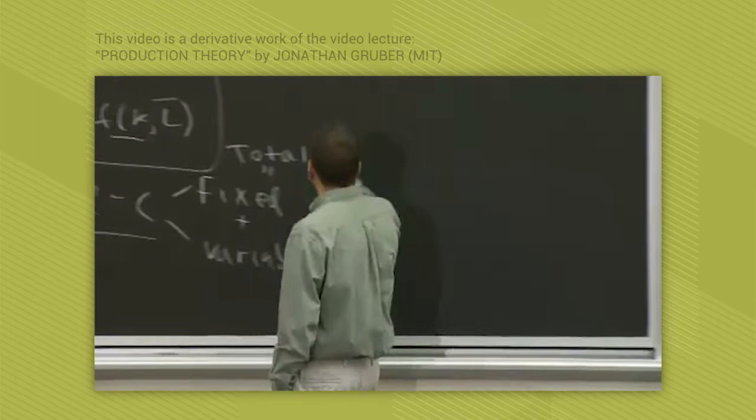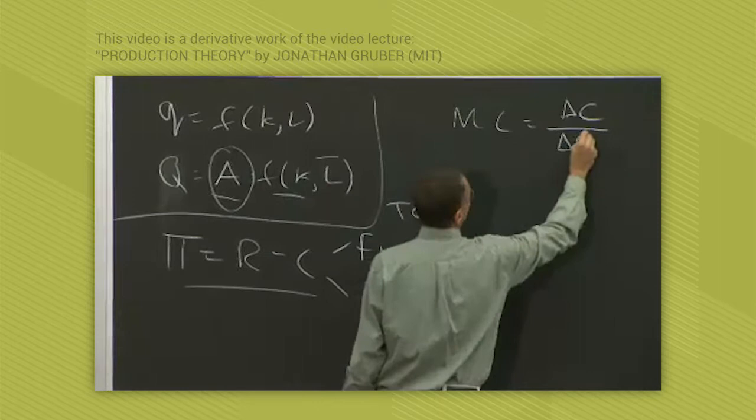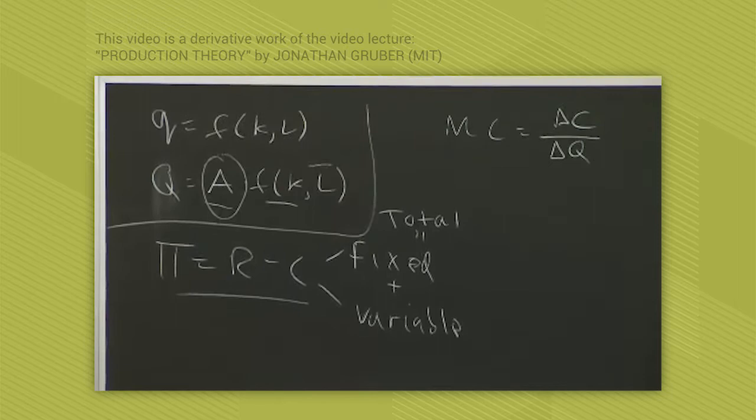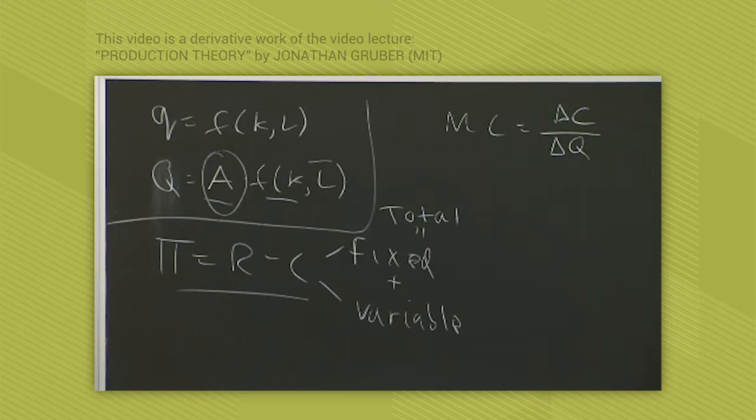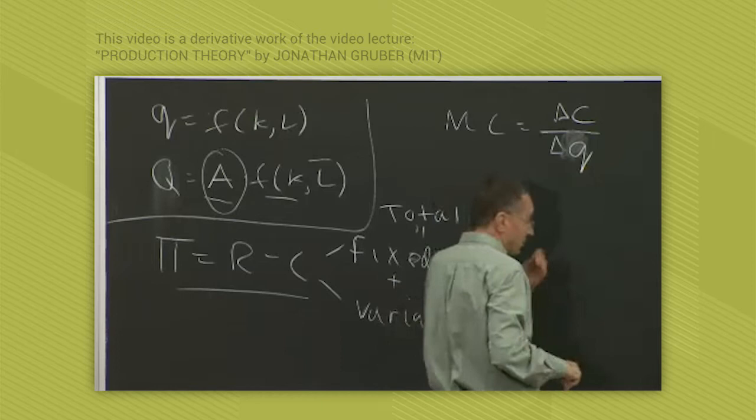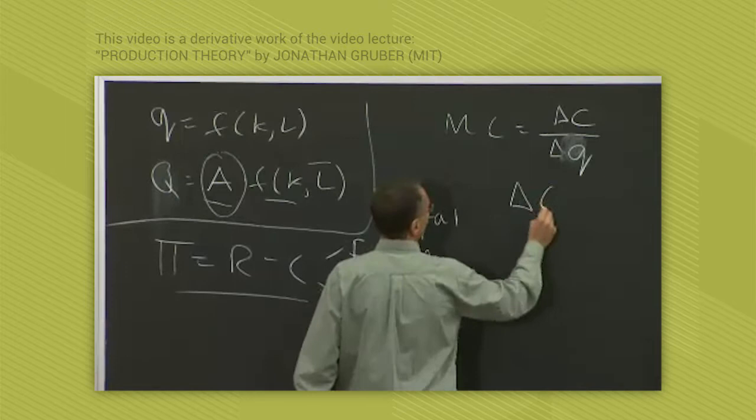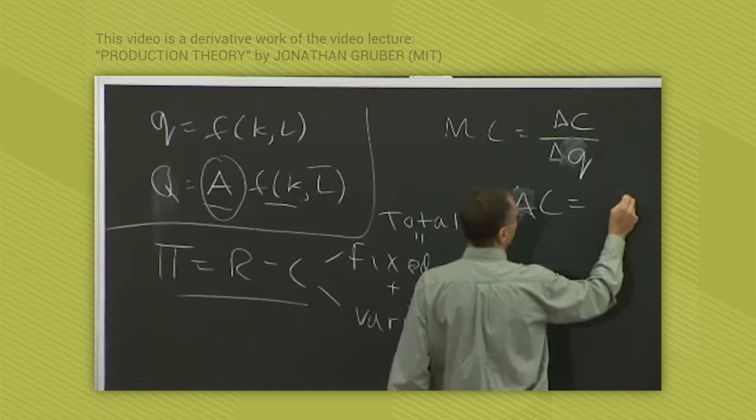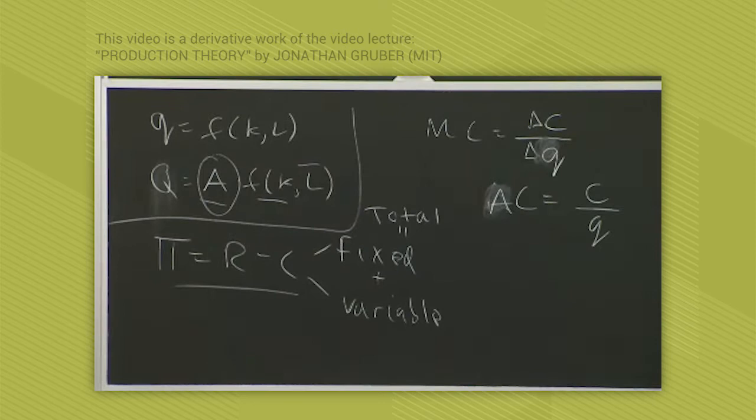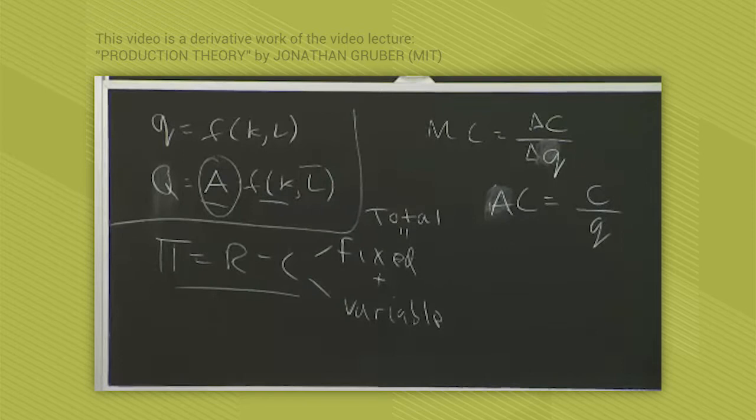Finally, another definition that's important is marginal costs, which is the change in costs with a change in output. So the marginal cost is just like - remember everything is - I think in terms of marginal decision making in this course. So the marginal cost is the change in a firm's costs with the change in the firm's output. And then finally, average cost is just what it sounds like. Average cost is just C over Q. The difference between marginal and average cost is basically average cost is the average over the whole set of goods produced. Marginal cost is the cost of that next unit of production.